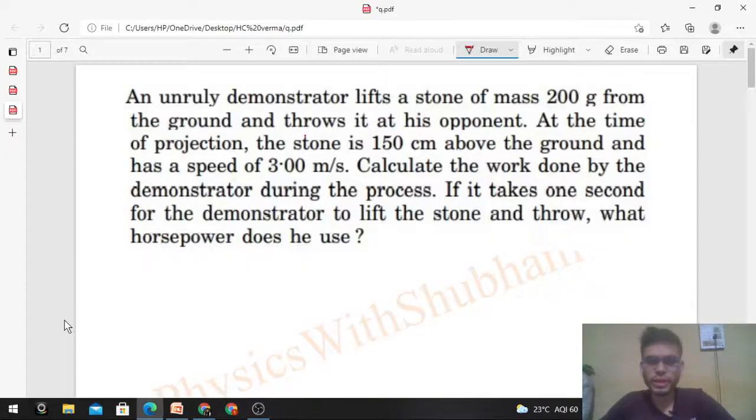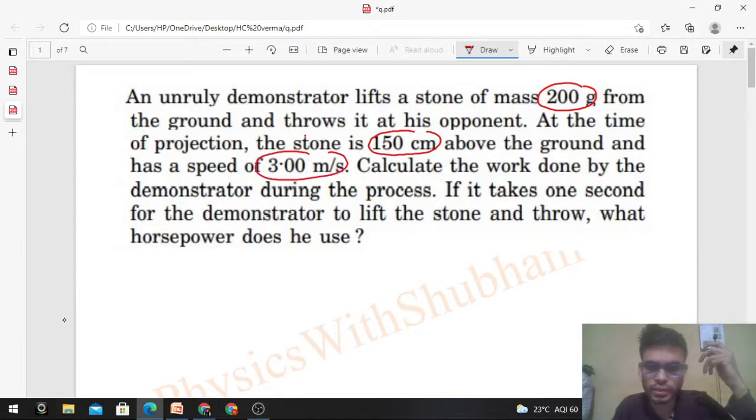Okay, hi everyone. Today let's discuss this interesting problem. An unruly demonstrator lifts a stone of mass 200 grams from the ground and throws it at his opponent. At the time of projection, the stone is 150 centimeters above the ground and has a speed of 3 meters per second. Calculate the work done by the demonstrator during the process.